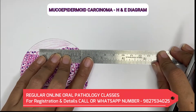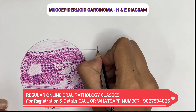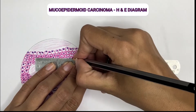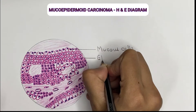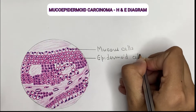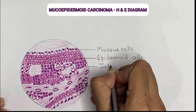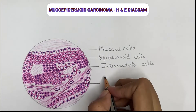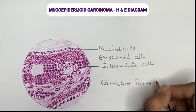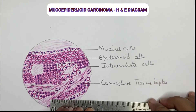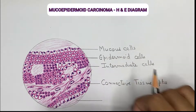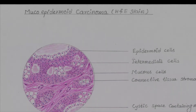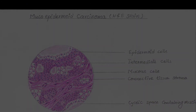Labeling the large foamy cytoplasmic cells with nuclei towards one end as the first population: mucus cells. Then the polygonal shaped flat cells as the epidermoid cells. Then the intermediate cells. Labeling the connective tissue septum, and marking the cystic spaces containing mucin. The oral pathology diagram of mucoepidermoid carcinoma is now complete.